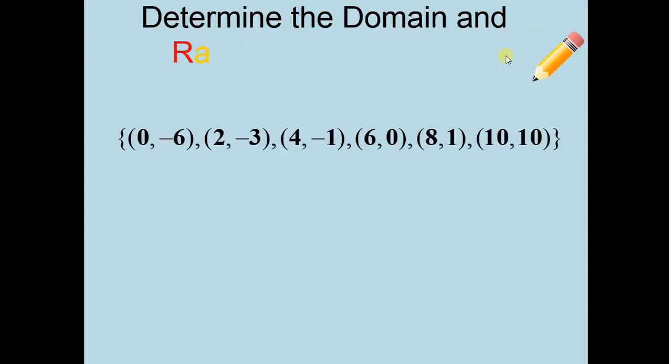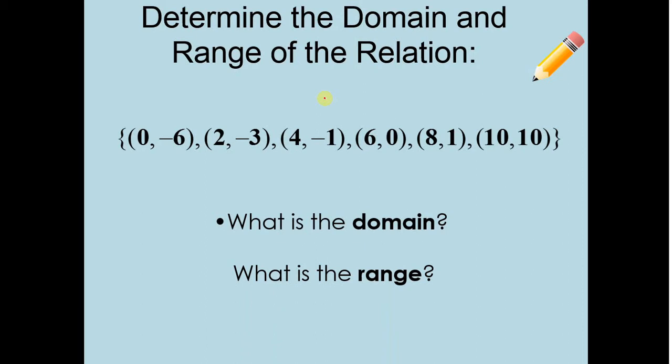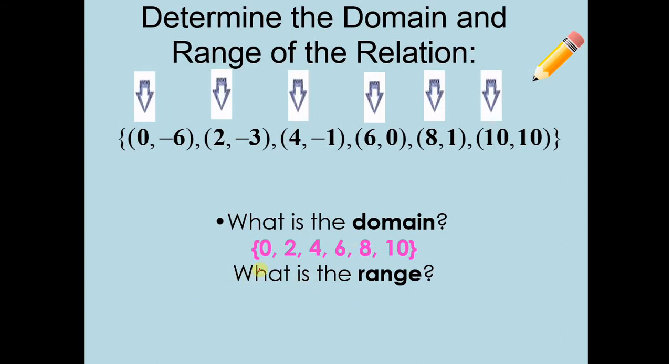So let's take a look here. We need to determine the domain and range of this relation. I have these ordered pairs and they're all put together, and I want to know who's my domain and who's my range. Domain meant it was your X values. Our domain are our X values. So I'm going to list them in order: 0, 2, 4, 6...